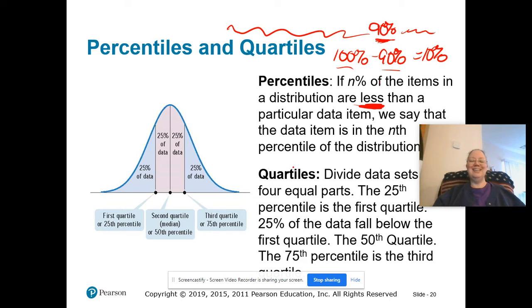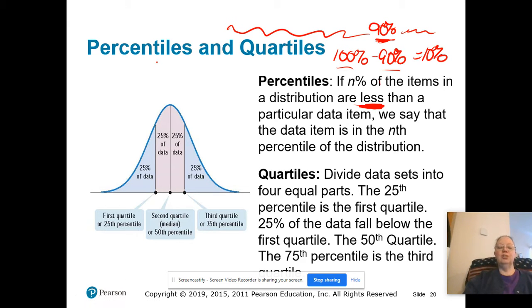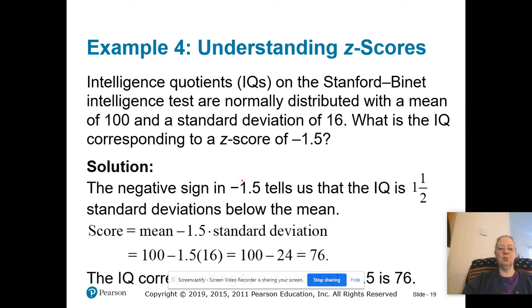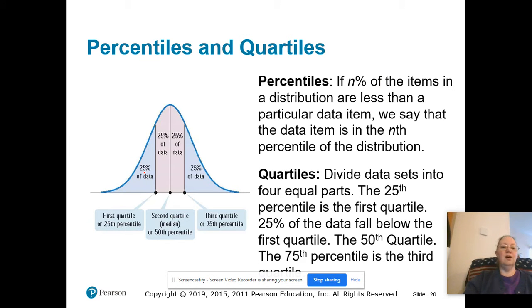Quartiles are related, but they are every 25%. So if we talk about the first quartile, that would be the first 25% of data items, or the 25th percentile. Quartile one is equivalent to the 25th percentile. Then, remember quarters, we divide it into four pieces.